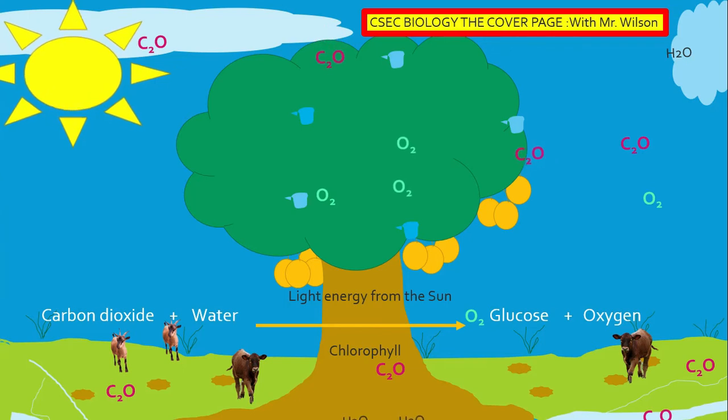The chlorophyll of course is used to trap the sunlight. And of course what's been produced? Glucose. Glucose is being produced and in some plants it's stored.